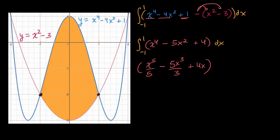And then we are going to evaluate it at one. And then subtract from that it evaluated at negative one. So let's first evaluate it at one. We're going to get one-fifth minus five-thirds plus four.